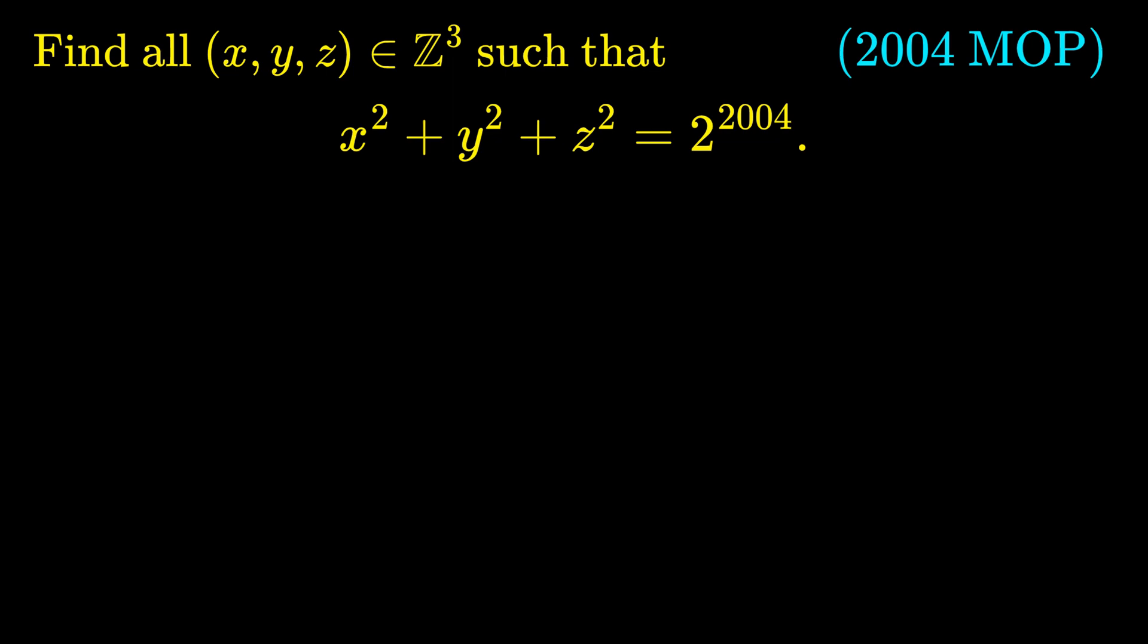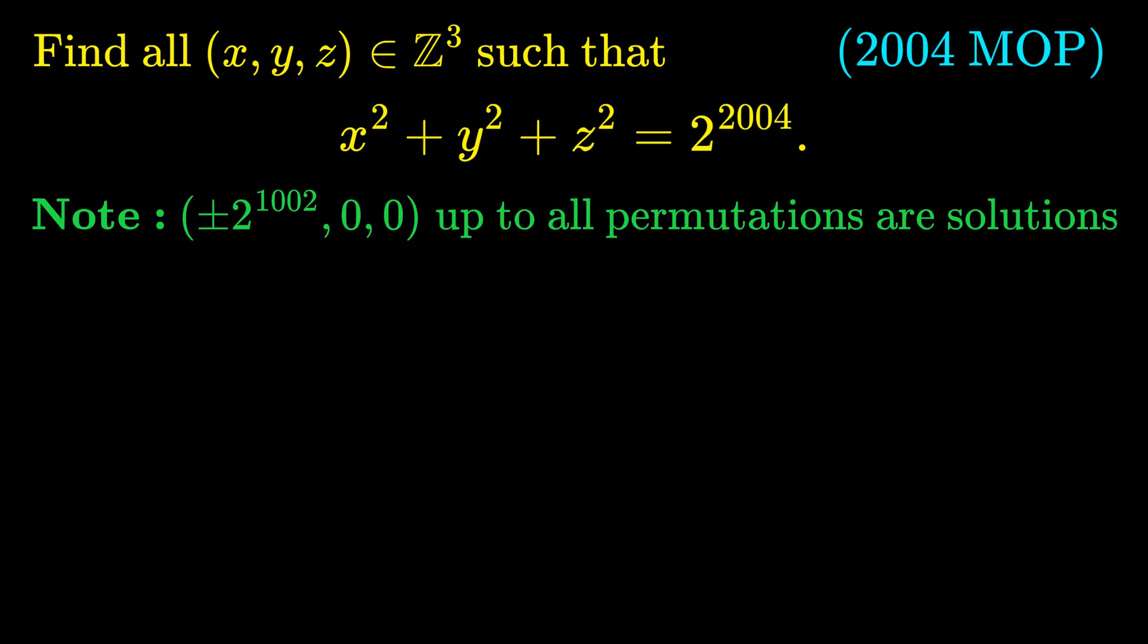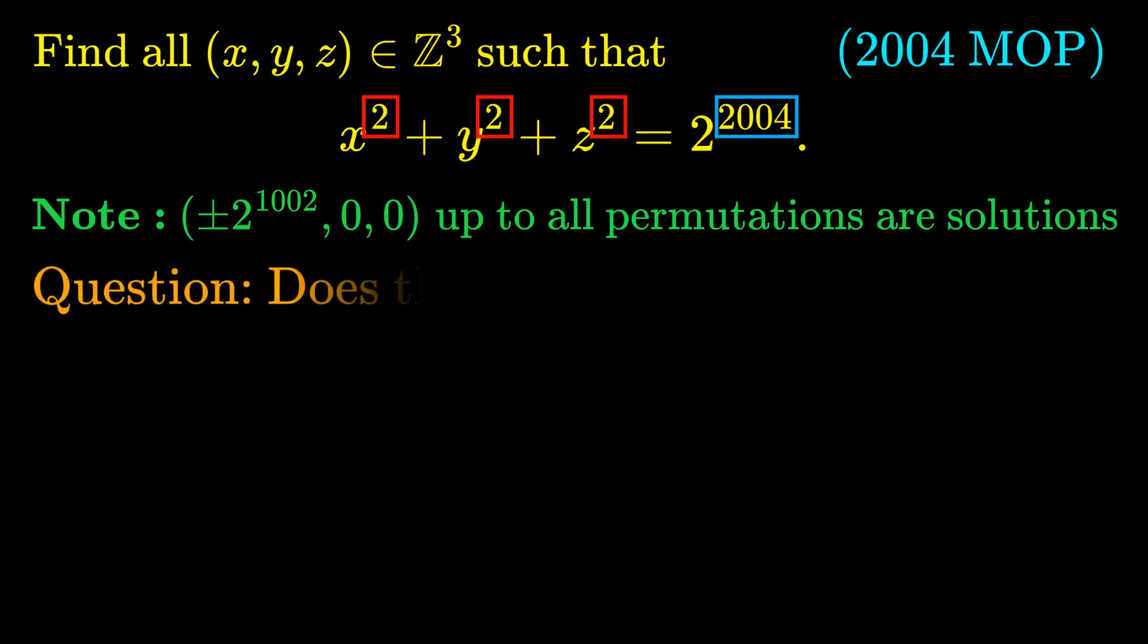To start, I want to note that the integer triples plus or minus 2 power 1002, 0, 0, up to all permutations are solutions to this equation, which is pretty obvious to guess based on the squares and the large exponents we have on the right-hand side. Now, the question we want to answer is: does there exist any other not obvious solutions to this equation? And the answer is very likely to be no.